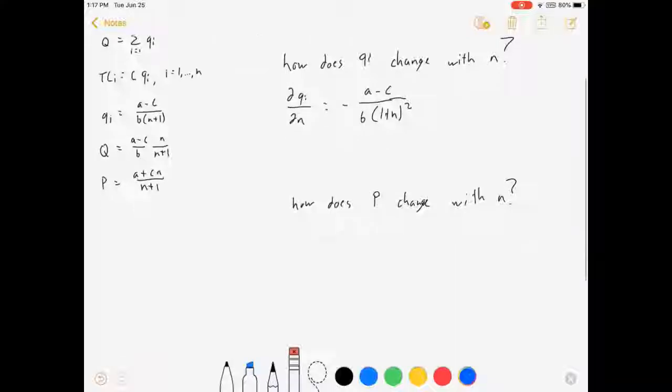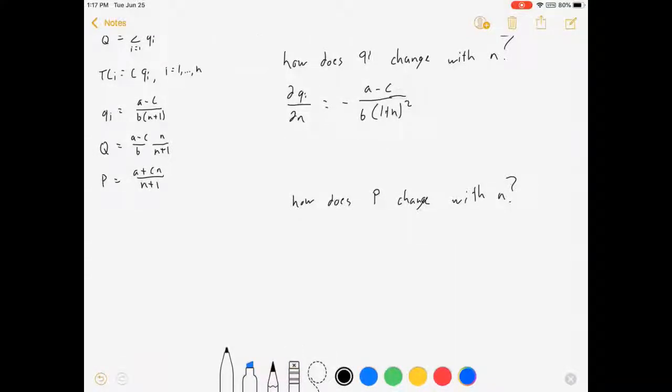If I want to answer how does the market price change with N, same idea. DQI, sorry, not QI, DP/DN is equal to (C minus A) over (N plus 1) squared.